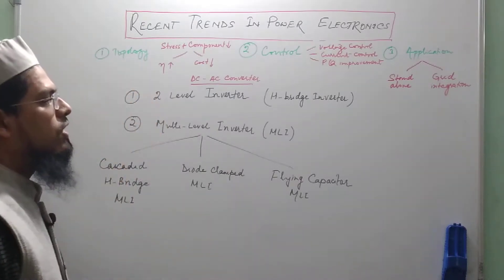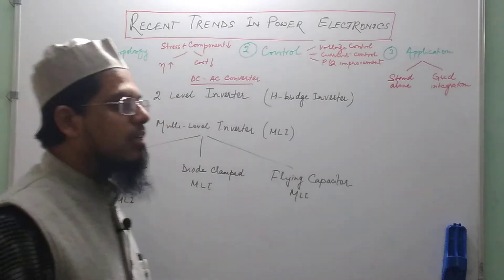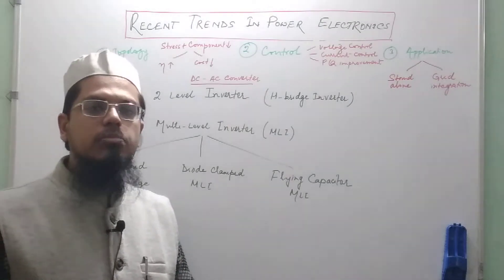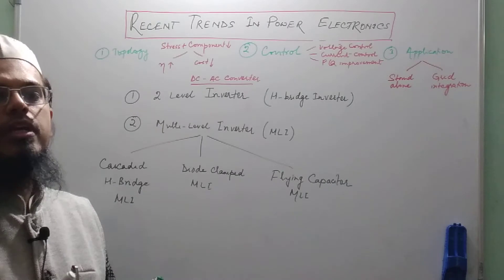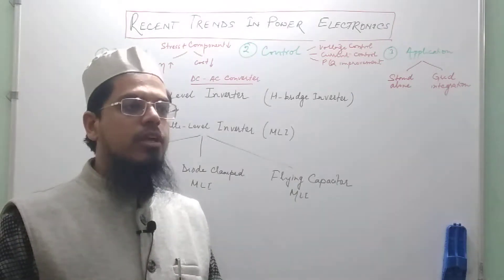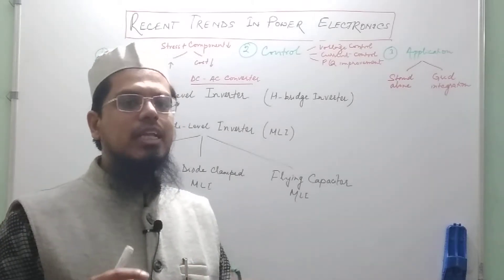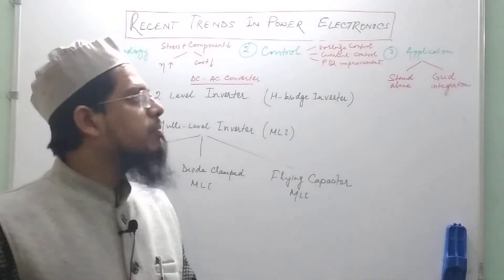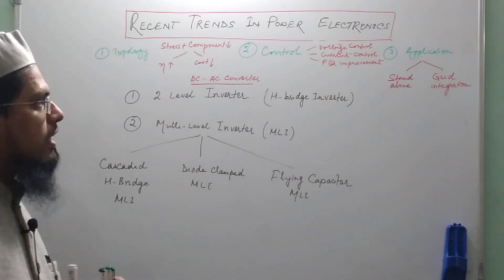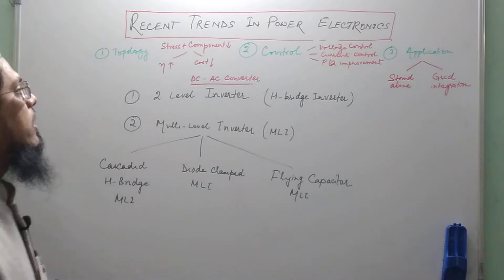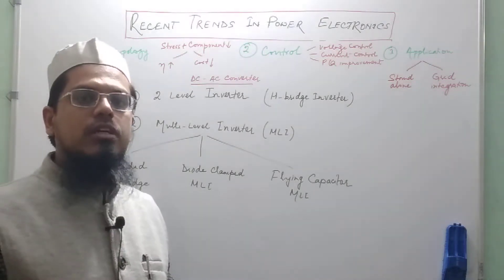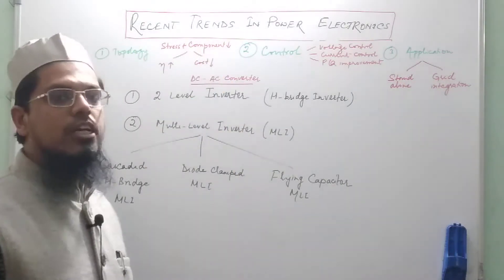The first being the topology. We know that a power electronic converter could either be a rectifier which converts an AC voltage into a DC voltage, or it could be a DC-to-DC converter, or a DC-to-AC converter — that is the inverter — or it could be an AC regulator, an AC-to-AC converter. These are the basic forms of conversion in power electronic converters. The area of development in topology basically focuses on reducing the stress across the switches used in the converter and reducing the number of components used.